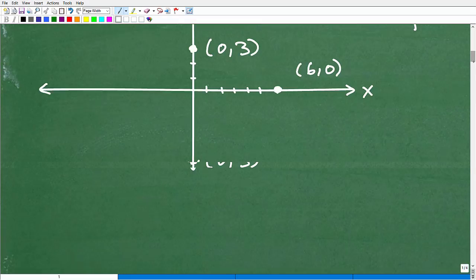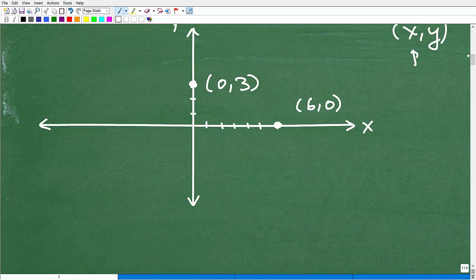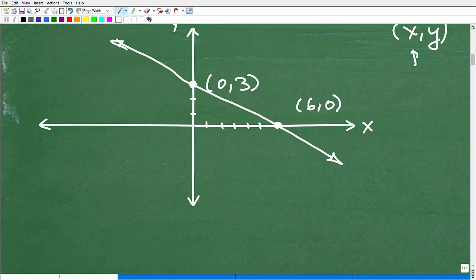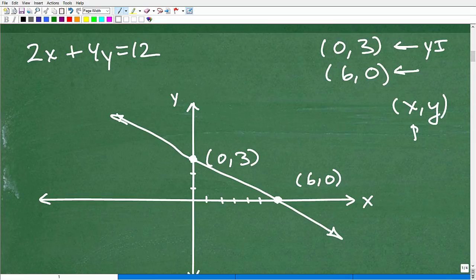And at this stage of the problem, all we need to do is be nice and neat about it, but we need to kind of just sketch our little line through. Whoops, I could do a little bit better than that. All right, that's a little bit better. So there is our line. And this is the line 2x plus 4y equals 12.